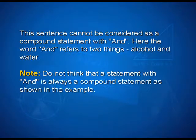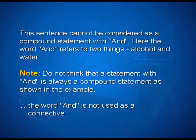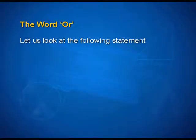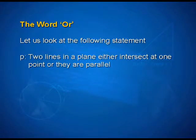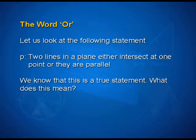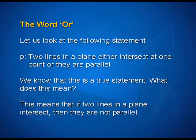Now consider the statement P: 'A mixture of alcohol and water can be separated by chemical methods.' This sentence cannot be considered as a compound statement with 'and,' because here the word 'and' refers to two things — alcohol and water. Please note: do not think that a statement with 'and' is always a compound statement. Therefore, the word 'and' is not used as a connective here.